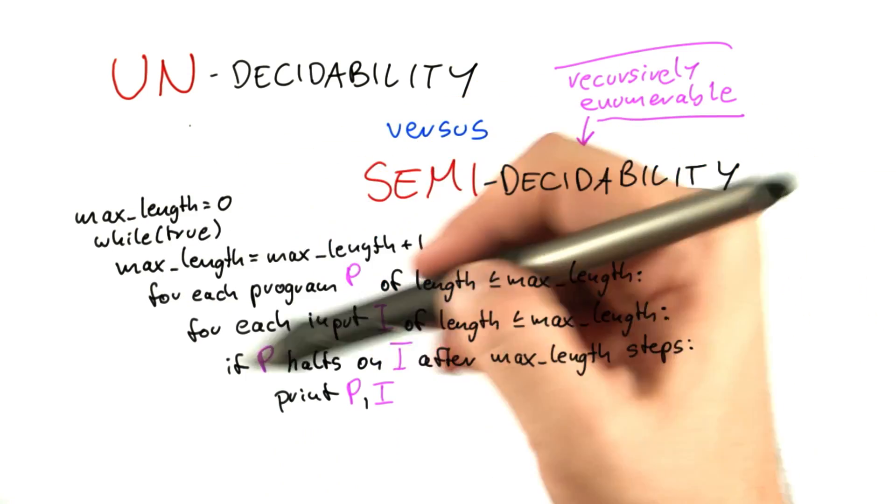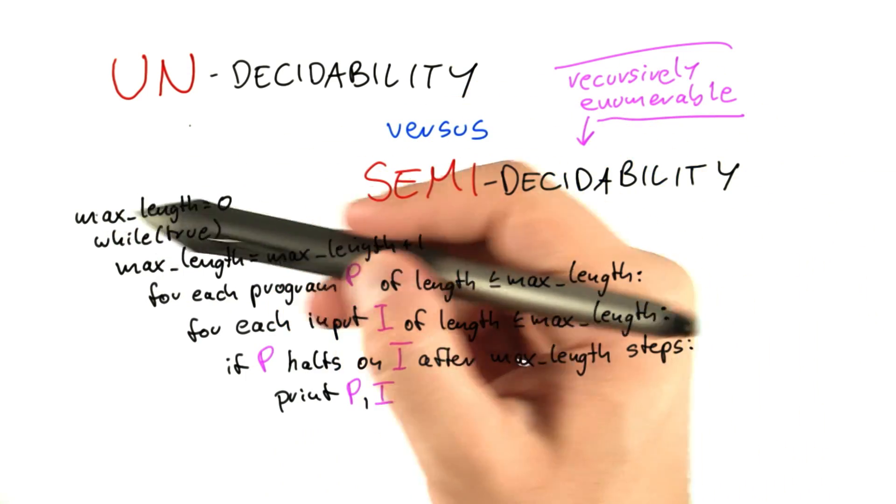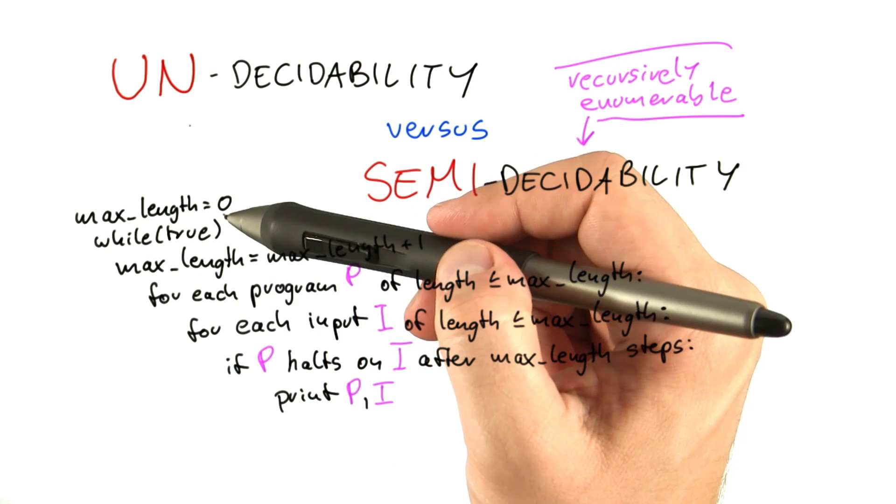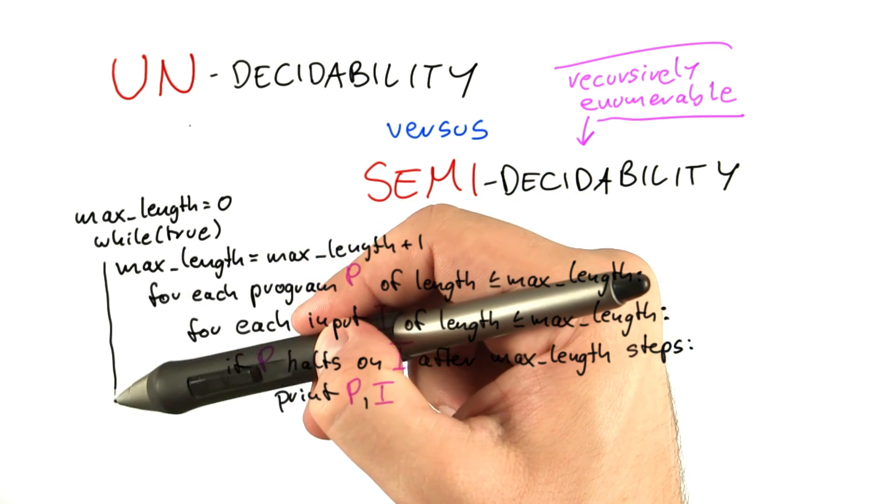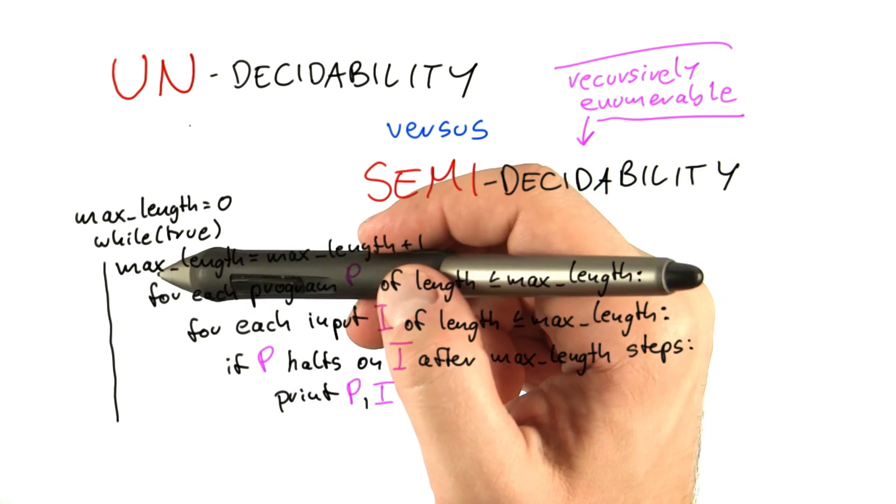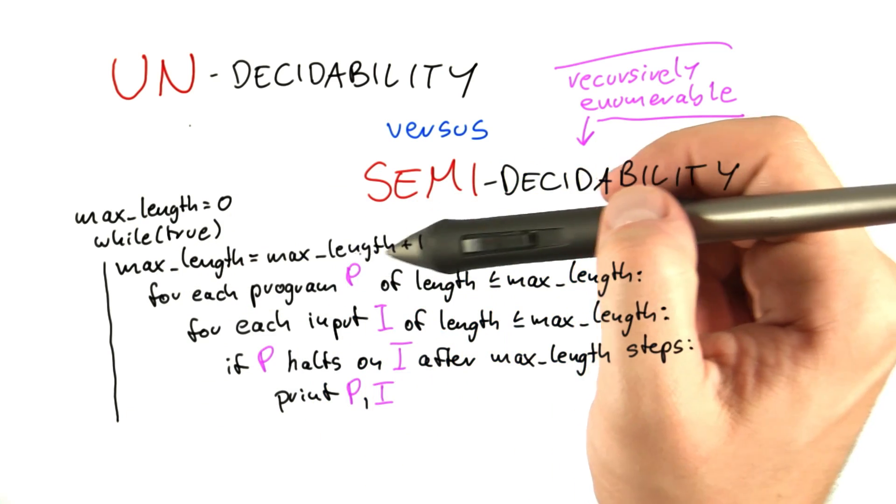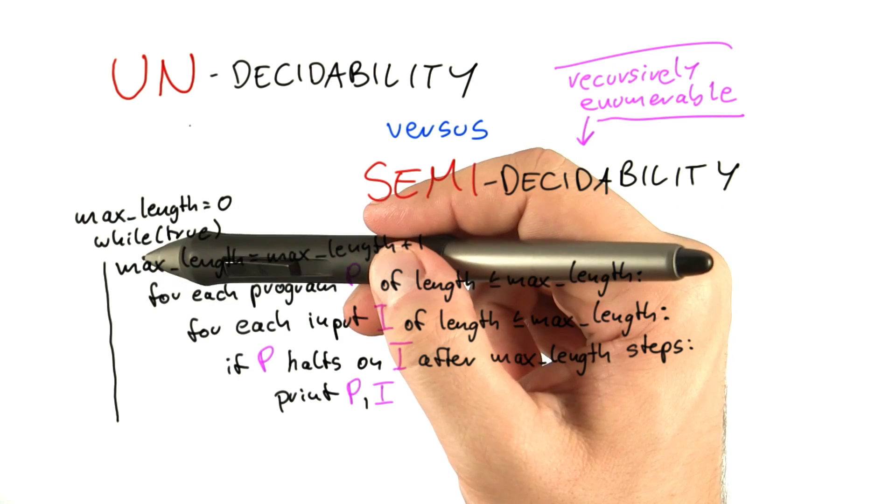And of course, this program runs on infinitely. So it starts out by defining a length called max_length to be 0, and then it goes into an infinite loop, which is this one here. And what it does then is it increases max_length by 1 each time it goes into this loop here,